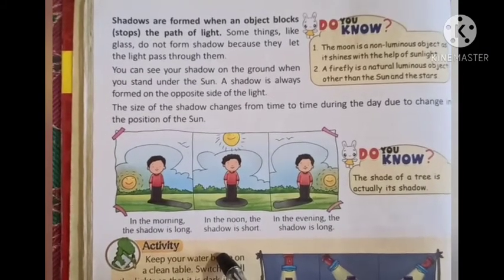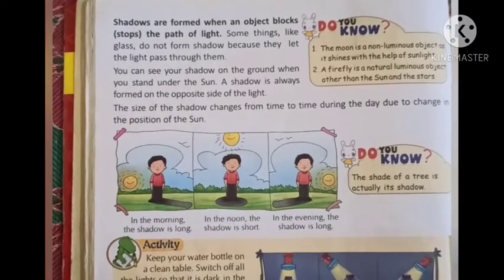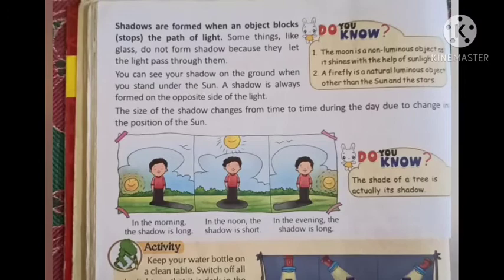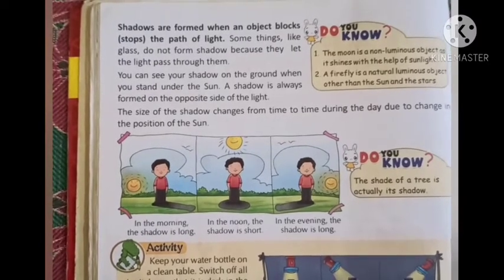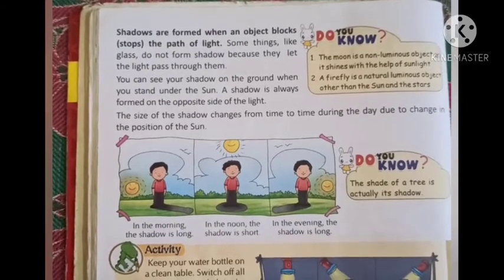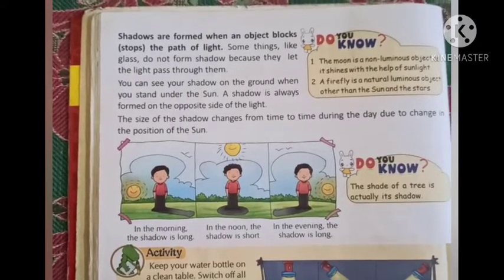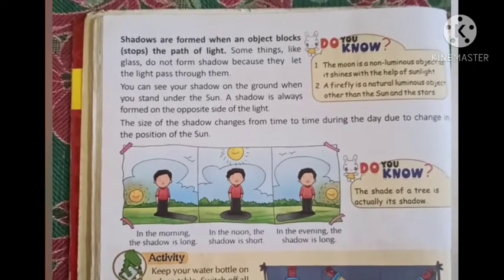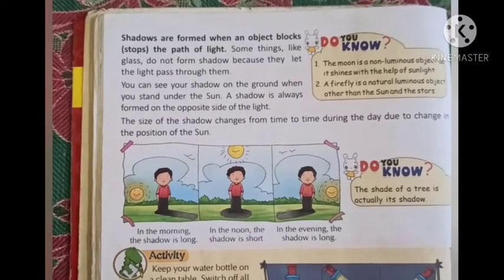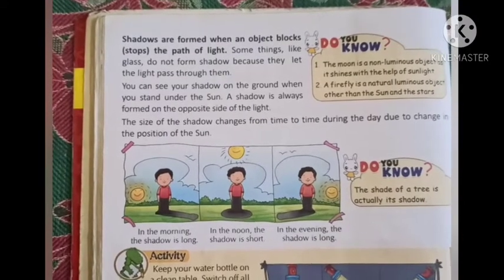A shadow is always formed on the opposite side of the light. The moon which shines in the sky during night time is a non-luminous object — the moon does not have light of its own but it takes light from the sun. Also, the stars that we see in the sky are non-luminous objects. A firefly is a small insect which has light of its own, so it is a natural luminous object.